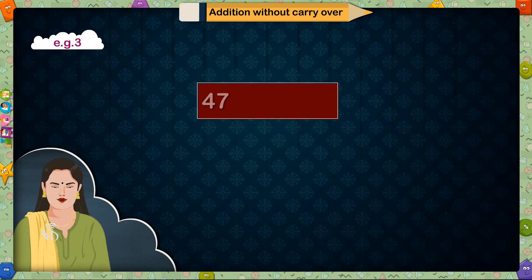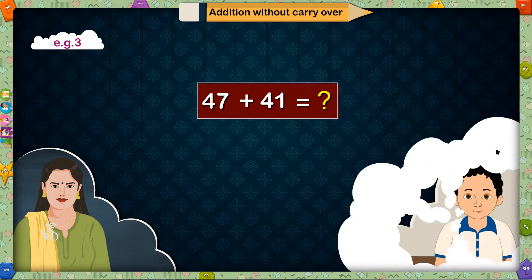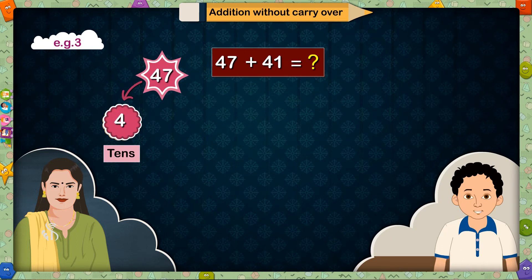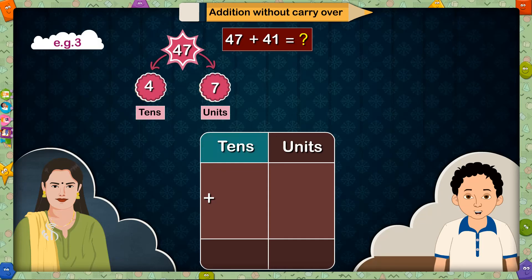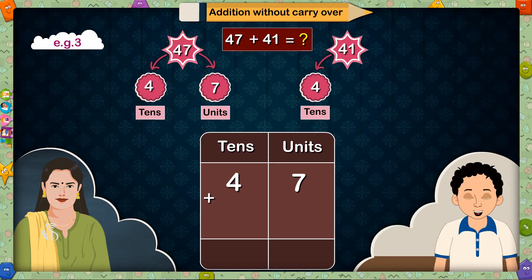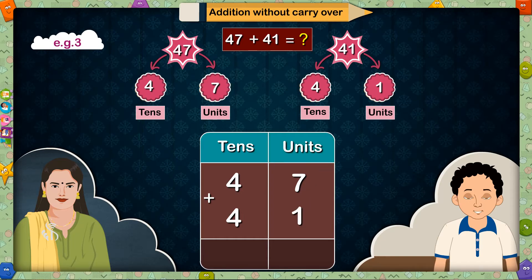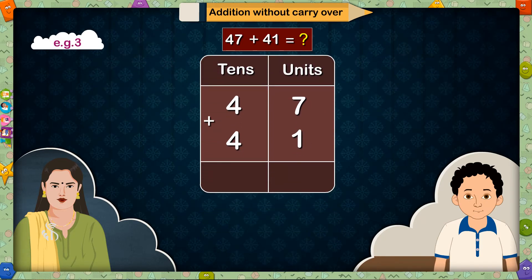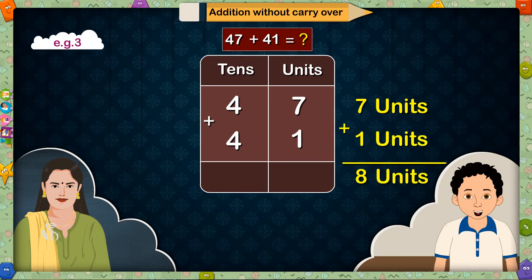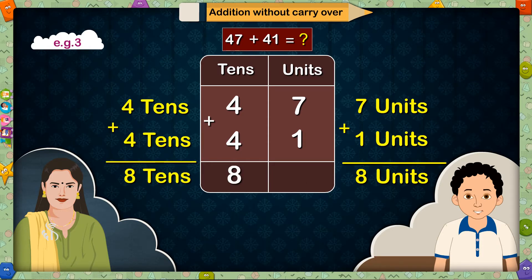Example 3: 47 plus 41 is equal to? We will have to write the sum vertically first. Who will write it? Madam, I will. There are 4 tens and 7 units in 47, so I will write 4 in tens place and 7 in units place. And there are 4 tens and 1 unit in 41, so I will write 4 in tens place and 1 in units place. Now add them: 7 plus 1 units make 8 units, and 4 plus 4 tens make 8 tens. 8 tens and 8 units make 88. Exactly — 47 plus 41 is equal to 88.